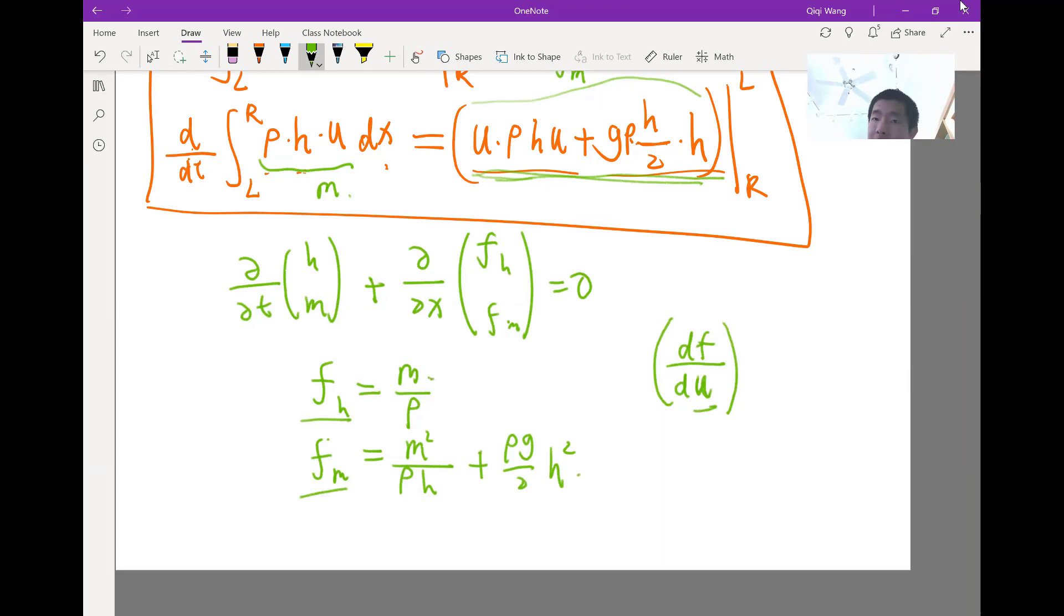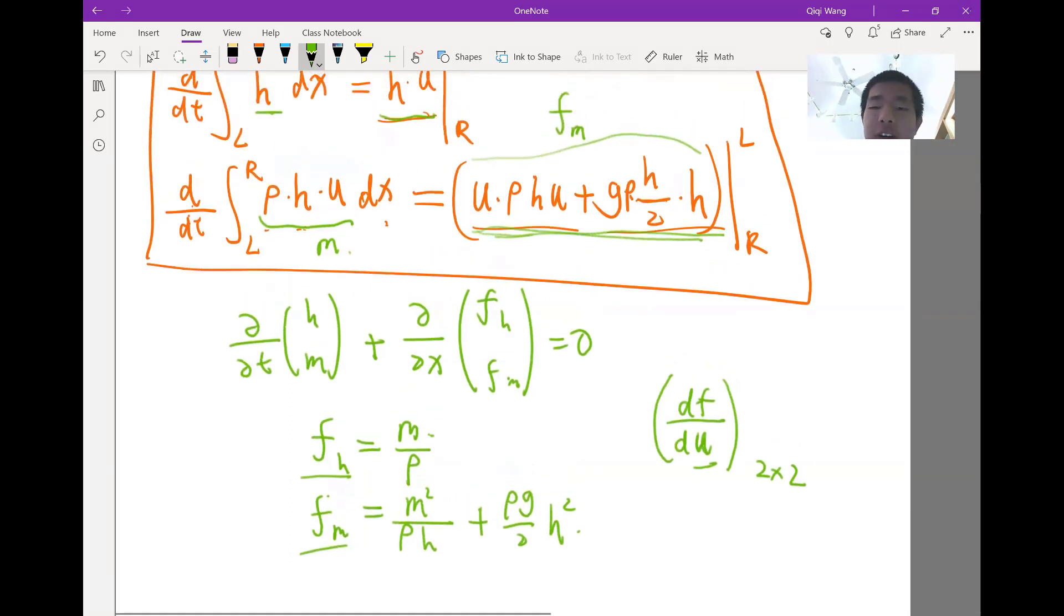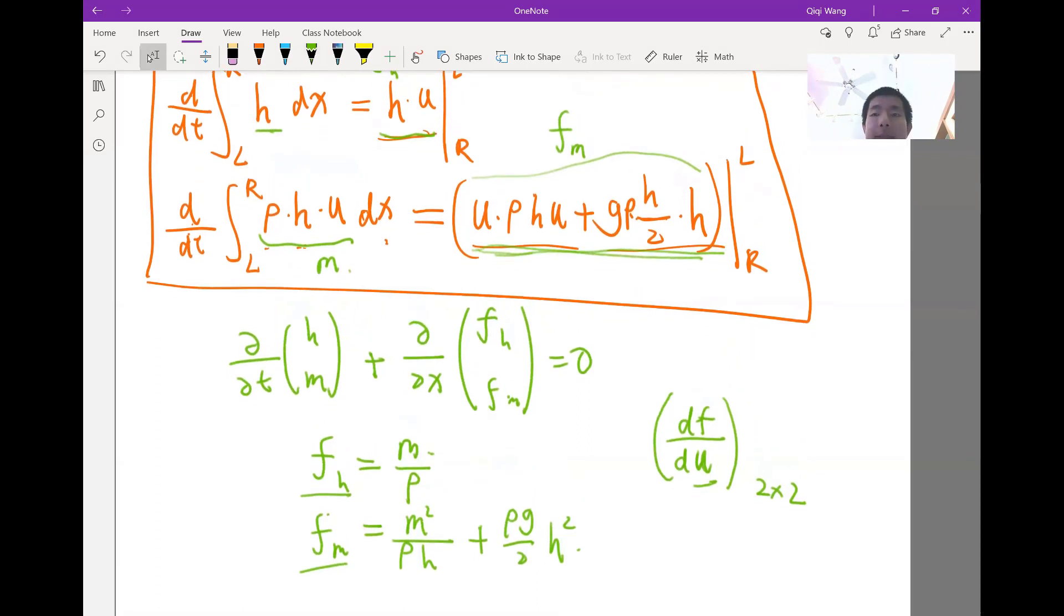So df/du is a matrix, and the fact that this is a two by two matrix would give you two different eigenvalues of df/du. And the two eigenvalues actually form two different wave speeds. So for any system of conservation laws, you would simultaneously see several different wave speeds happening at the same time.